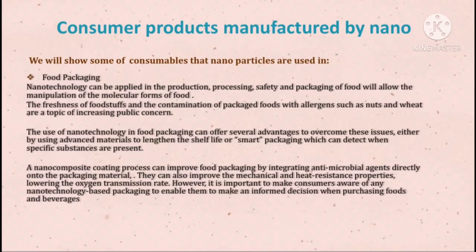Consumer products manufactured with nano: Food Packaging. Nanotechnology can be applied in the production, processing, safety and packaging of food, allowing the manipulation of the molecular forms of food. The freshness of foodstuffs and contamination of packaged food with allergens such as nuts and wheat are topics of increasing public concern. The use of nanotechnology in food packaging can offer several advantages — either by using advanced materials to lengthen the shelf life or smart packaging which can detect when specific substances are present. A nanocomposite coating process can improve food packaging by incorporating antimicrobial agents directly onto the packaging material, improving mechanical and heat resistance properties and lowering the oxygen transmission rate. It is important to make consumers aware of any nanotechnology-based packaging to enable them to make an informed decision when purchasing food and beverages.